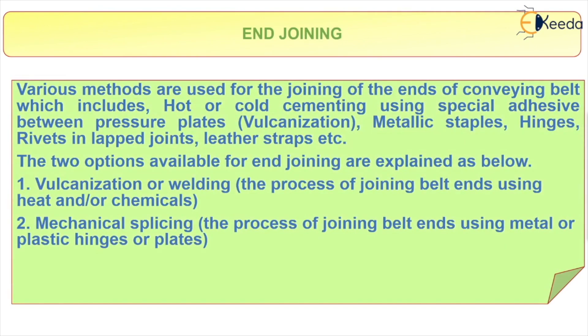Next we have end joining. The belt has two ends, and to join them we have different methods. There are two methods of joining: the first one is vulcanization or welding, and the second one is mechanical splicing.